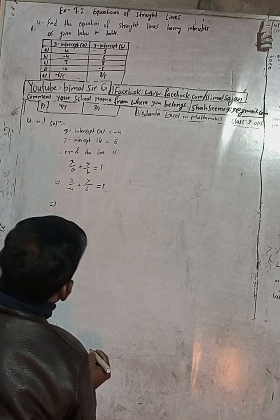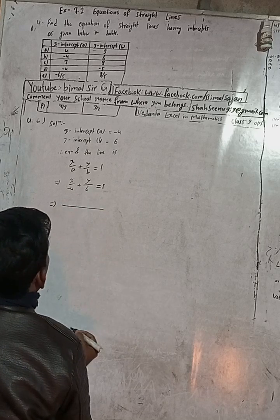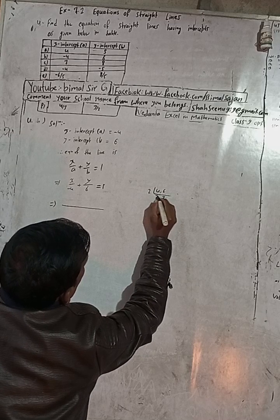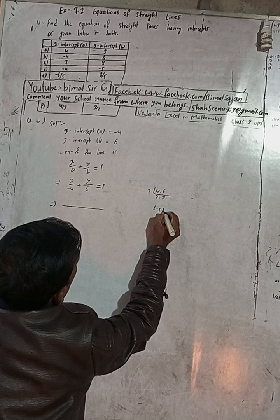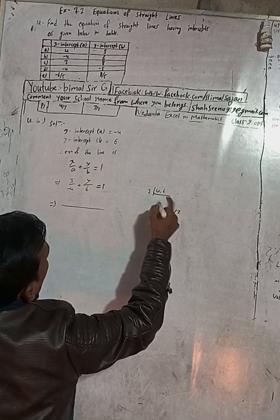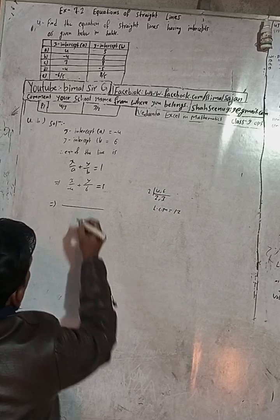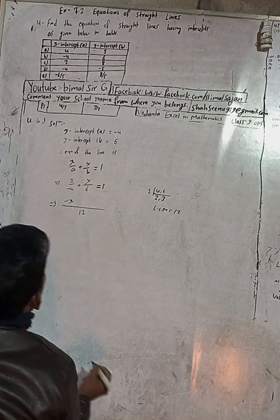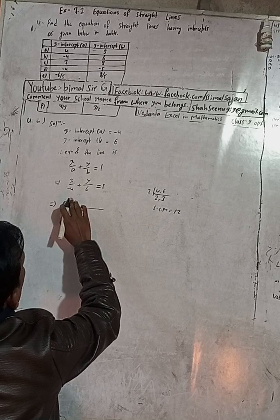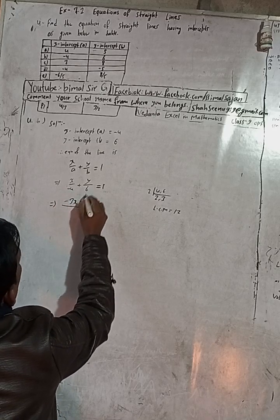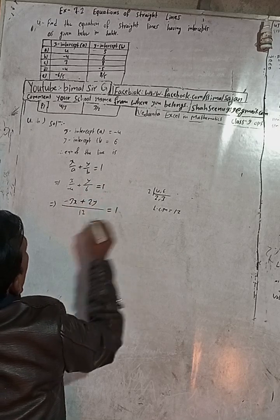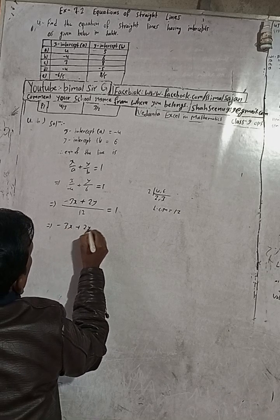Now find the LCM of 4 and 6. LCM of 4 and 6: taking factor 2, we get 3 and 2, so LCM is 12. Multiplying through by 12: 12 divided by 4 is 3, so we get minus 3x. Then 12 divided by 6 is 2, so we get plus 2y. This gives minus 3x + 2y = 12.